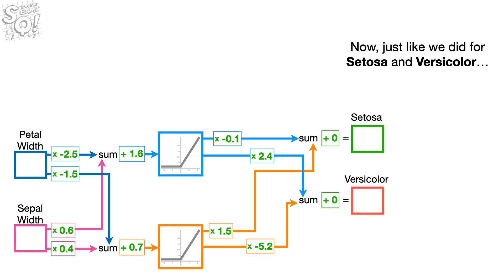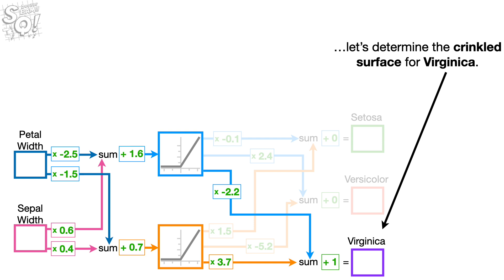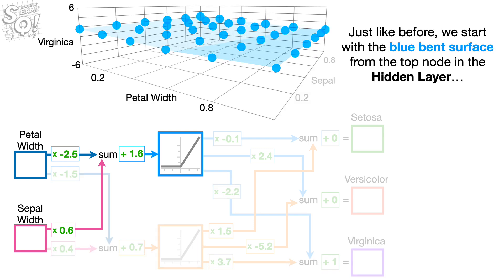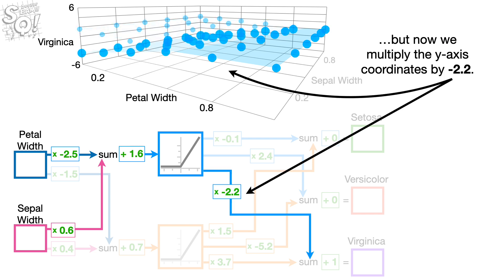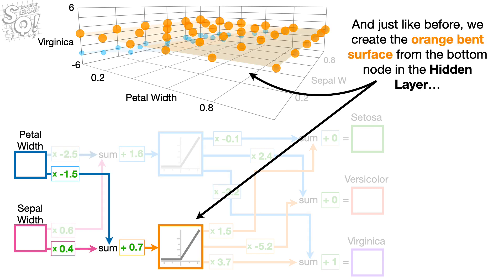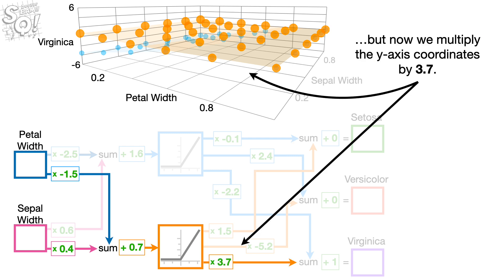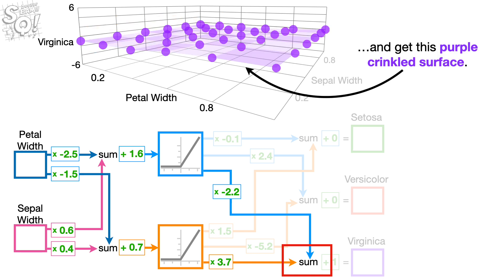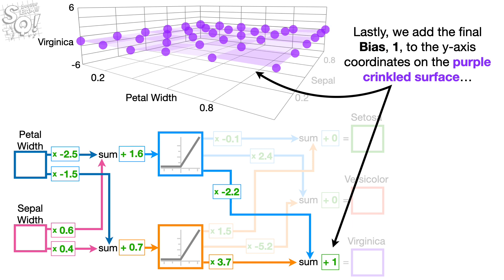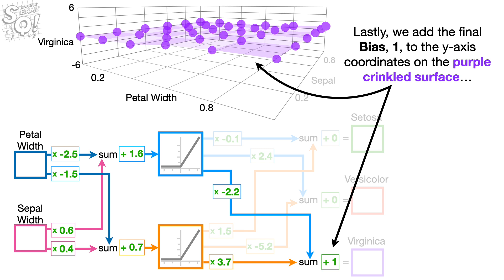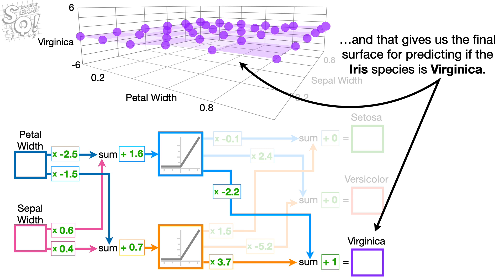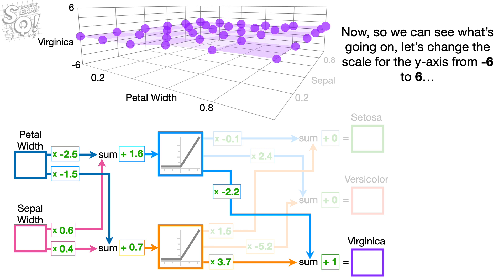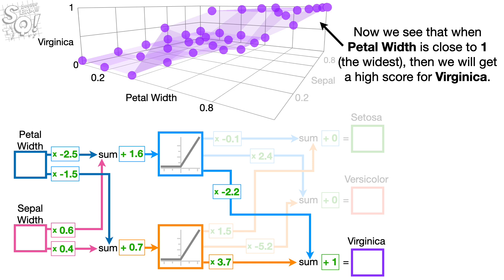Just like we did for Setosa and Versicolor, let's determine the crinkled surface for Virginica. We start with the blue bent surface from the top node in the hidden layer, but now we multiply the y-axis coordinates by negative 2.2. We create the orange bent surface from the bottom node in the hidden layer, but now we multiply the y-axis coordinates by 3.7. We add the y-axis coordinates from the two bent surfaces together to get the purple crinkled surface. Lastly, we add the final bias, 1, to the y-axis coordinates on the purple crinkled surface, giving us the final surface for predicting if the iris species is Virginica. When we change the y-axis scale to 0 to 1, we see that when petal width is close to 1, we will get a high score for Virginica.